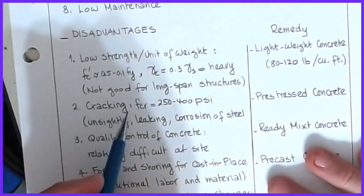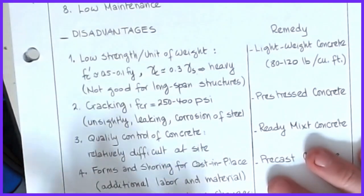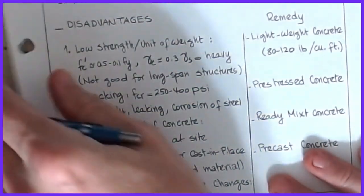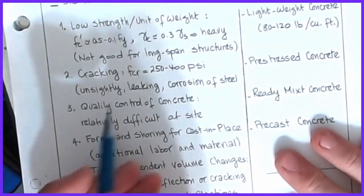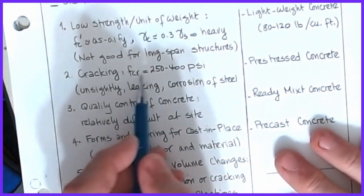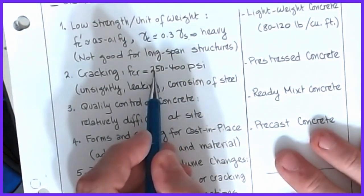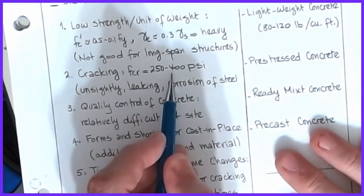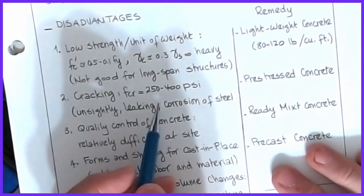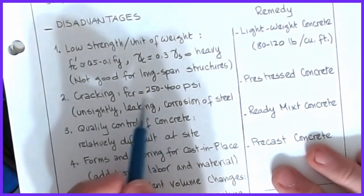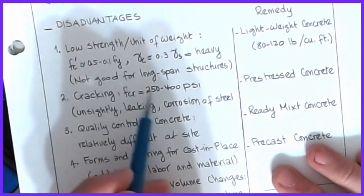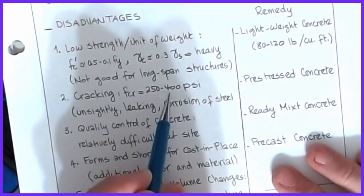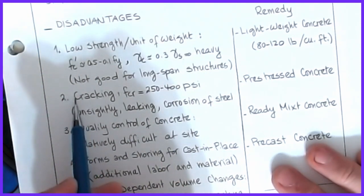For this course, we won't be dealing with pre-stressing. The cracking characteristics of concrete: cracking occurs at very low stresses, in the neighborhood of 250 to 400 PSI — compare that to our 3,000 to 8,000 PSI compressive strength, that's a very, very low value. The problem with concrete, as we joke around, is that concrete by nature has got to crack at some point.